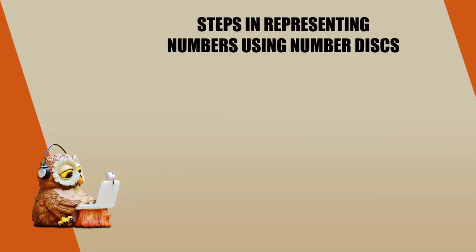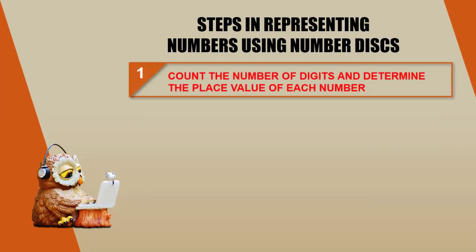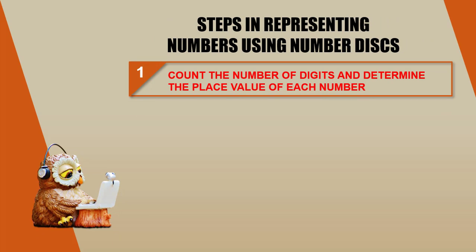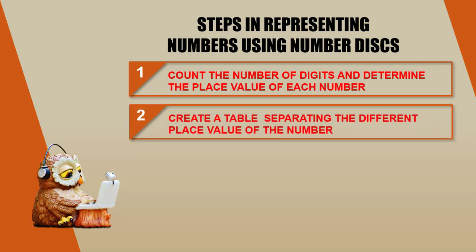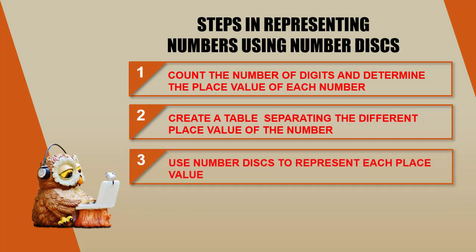Take note. Step 1: Count the number of digits in the number, and identify the place value of each digit. Step 2: Make a table which would separate the digits. Step 3: Add number disks which would represent each place value. To further understand what I am saying, let's use the steps in representing the number given earlier.